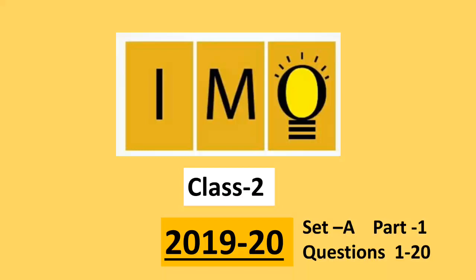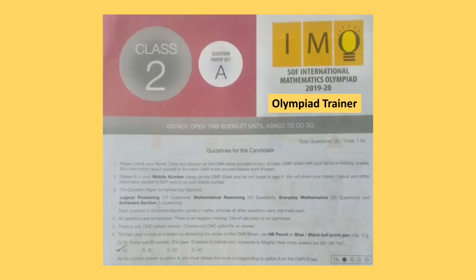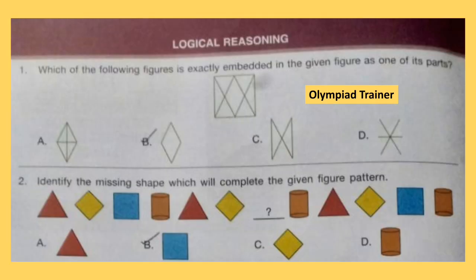Welcome to our channel Olympiad Trainer. Here I am with the question paper of IMO, i.e. International Mathematics Olympiad exam for class 2, year 2019-20, set A. The question paper comprises 4 sections: Logical Reasoning, Mathematical Reasoning, Everyday Mathematics, and Achiever section. In this video, we are going to see the first two sections. For the other two sections, please click on the link given in the description box. New users, please subscribe to our channel Olympiad Trainer for more such solved question papers. Let's start with the first section, Logical Reasoning.